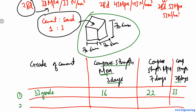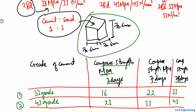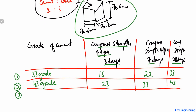For 43 grade cement, the compressive strength at 3 days is 23 MPa, at 7 days it reaches 33 MPa, and at 28 days it reaches 43 MPa. For 53 grade cement, it achieves 27 MPa at 3 days, 37 MPa at 7 days, and 53 MPa at 28 days.